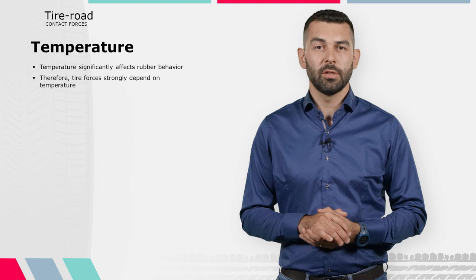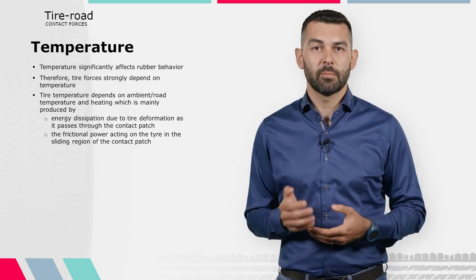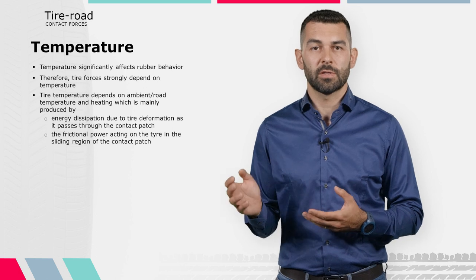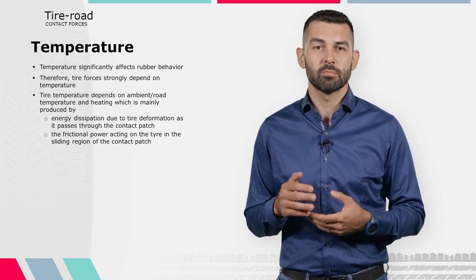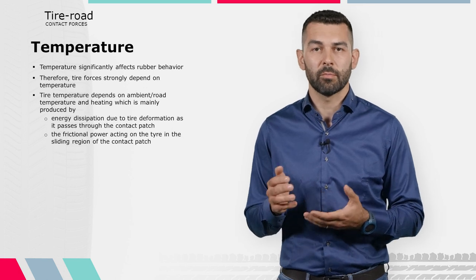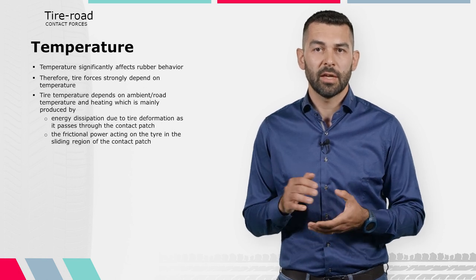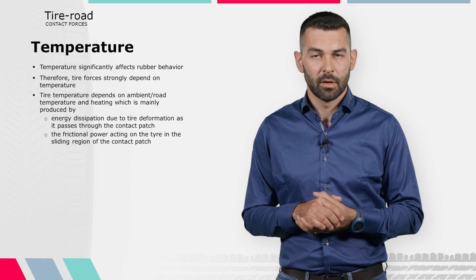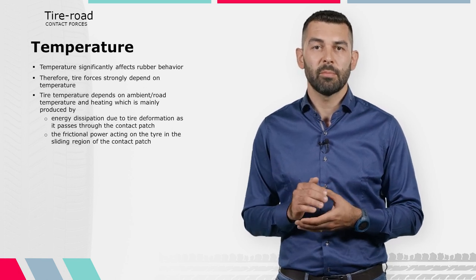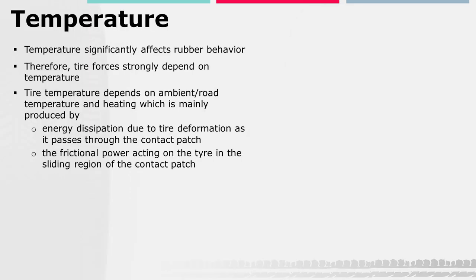Temperature has a strong impact on tire behavior. Tire temperature depends on ambient temperature, road surface temperature, and heating, which is mainly produced by energy dissipation due to tire deformation as it passes through the contact patch, and by frictional power acting on the tire in the sliding region of the contact patch. Variation in tire temperature affects the rubber compound viscoelastic properties. At very low temperature the rubber is rigid and brittle — the glassy state — while at high temperature it is flexible and elastic — the rubbery state. Cornering stiffness and grip consequently vary with temperature.